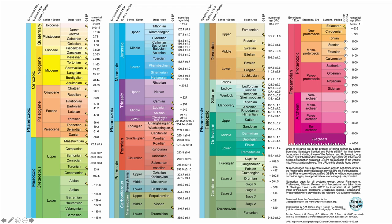If you look at the Modern Stratigraphic Time Chart — a recent version from the International Commission for Stratigraphy, or ICS, website, which you can download for free — you will see that each one of these stages, or a lot of these stages, have a golden spike, like here at the base of the Holocene. That golden spike indicates that the GSSP has been defined, so we have a convention for defining the base of that particular stage. Let's now look at some examples of defining GSSPs.